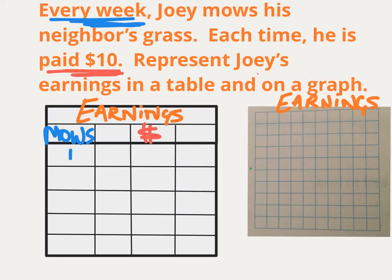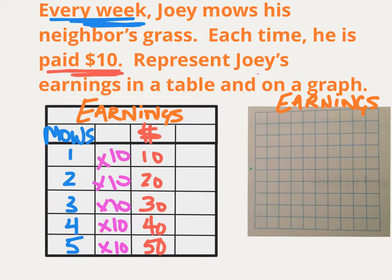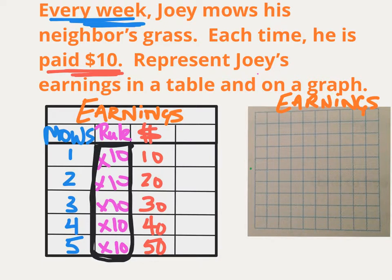When he mowed the first time, he got $10. The second time, another $10, so now he has $20. The third time, $10 more. This rate is a multiplicative relationship — if I take the number of times he's mowed and multiply it by 10, I get the amount of money he's earned. So by the time he mows for the fifth time, he's made a total of $50. The rule is times 10, and notice how the rule never changes. When you have a rule in your table, that rule must be the same every single line. If it doesn't work, it isn't the rule.